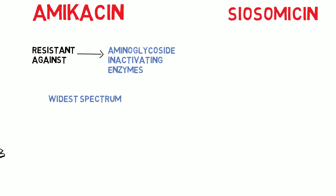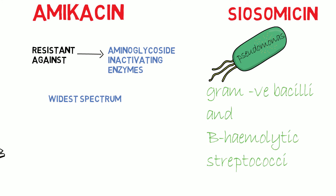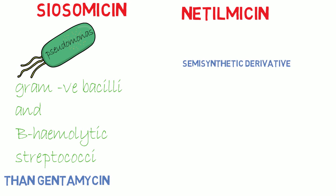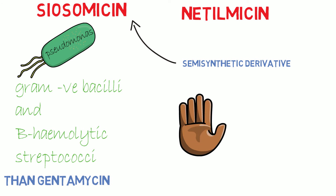Sisomycin is more potent against Pseudomonas and a few other gram-negative bacilli and beta-hemolytic streptococci than gentamicin. Netilmicin is a semi-synthetic derivative of sisomycin, and is also resistant to bacterial aminoglycoside-inactivating enzymes.